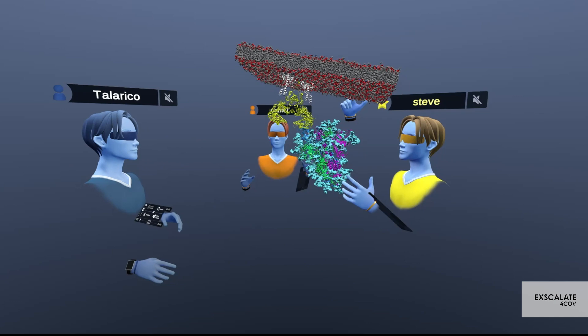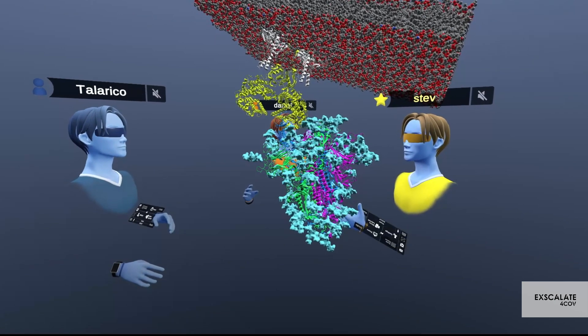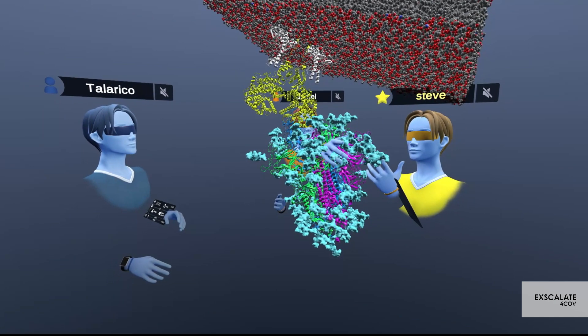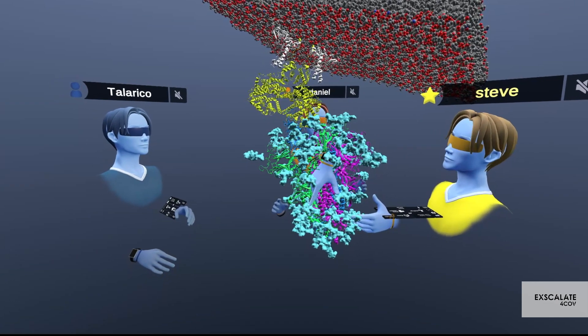So today we're going to be looking at the spike protein. We can see that right here it's fully glycosylated so you can see all the glycans located in the light blue color.